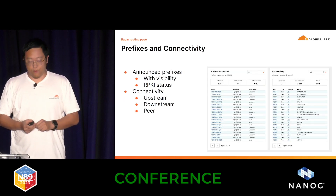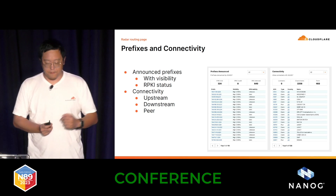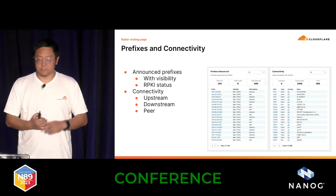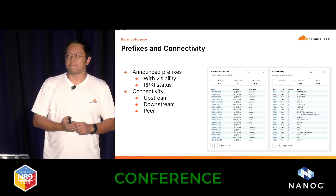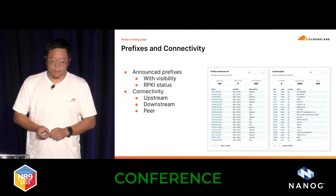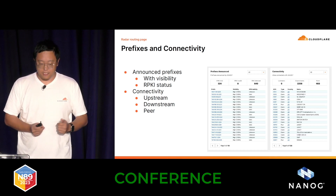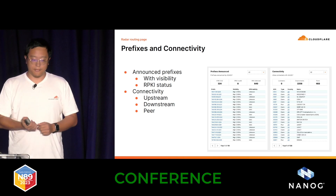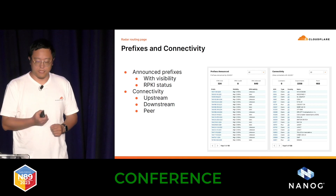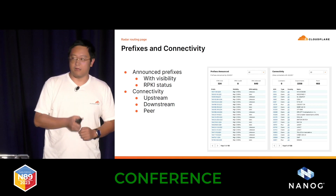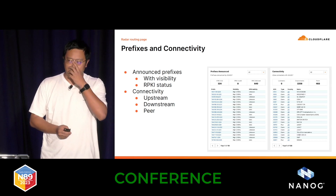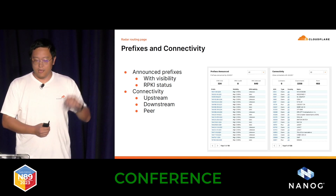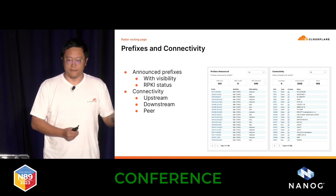For any given network, we also have more detailed pages for the prefixes it announces, along with visibility. We count the number of collectors or vantage points where we see the prefix announced, and we get a percentage of how many are visible in the global routing table. The RPKI status is also attached to each prefix announcement, so you can filter by RPKI invalid. For example, if you're an operator and want to check whether any prefix you announce is RPKI invalid, you can quickly go there, filter by invalid, and see the list.